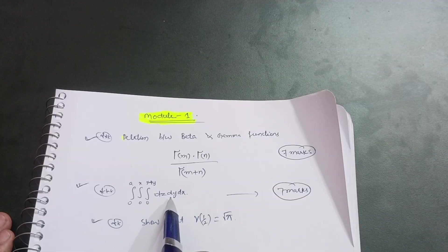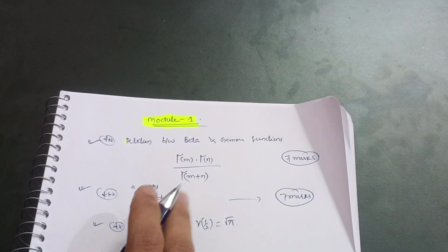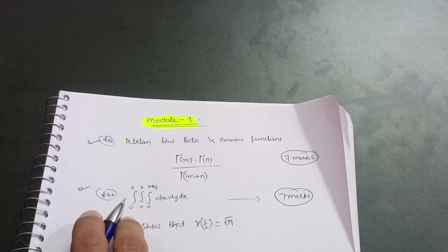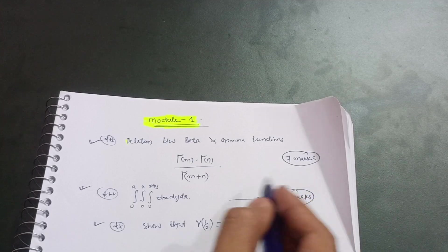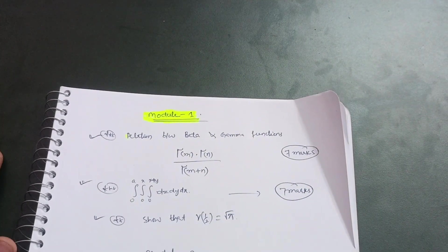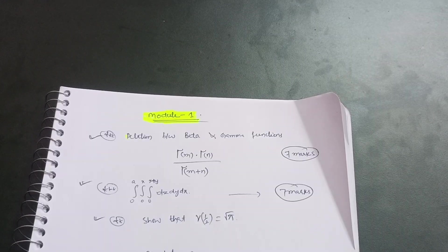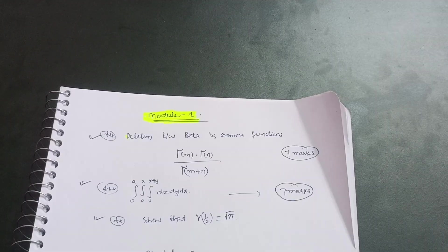These triple integral questions will appear in the examination. Try some problems from these concepts so you can conquer at least 12 or 13 marks from Module 1. These are just the passing package — not for students who want high marks. It is for students who find this subject difficult and are struggling with it. Students who want more marks and a good CGPA should complete the full syllabus.